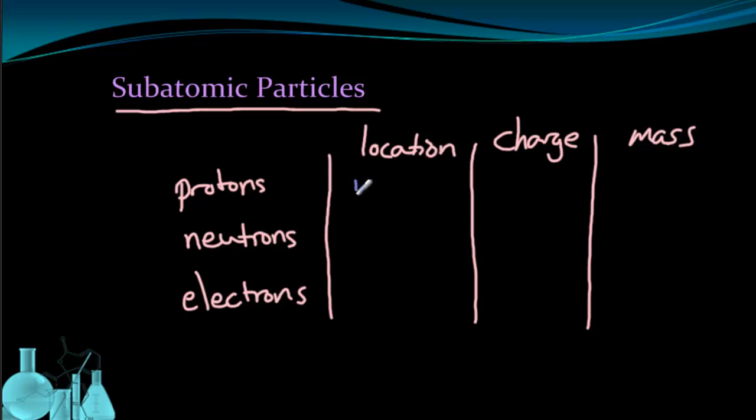And lastly, we're going to look at the mass of the particle. So starting with location, we know that protons are in the nucleus. Neutrons are also in the nucleus. And electrons are in the empty space outside the nucleus.